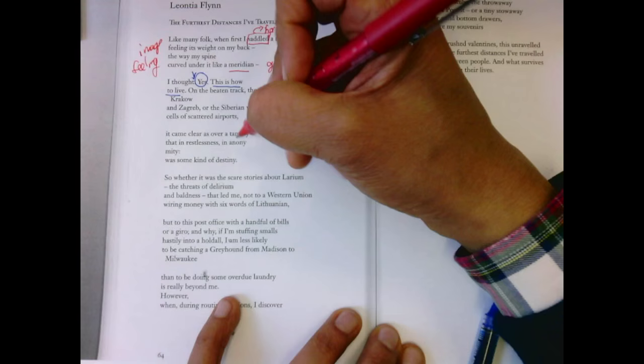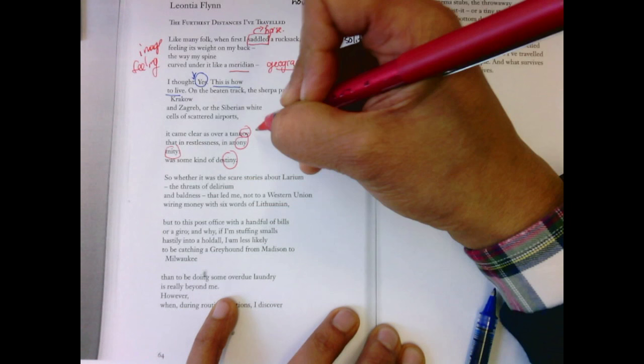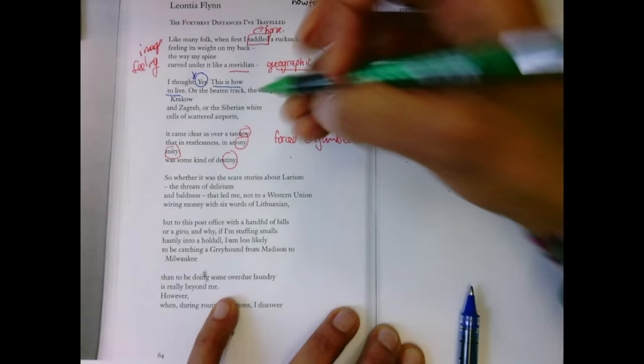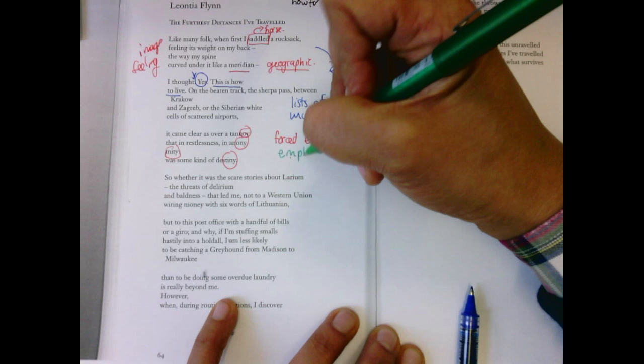It came clear over a tannoy that in Restless an animity was some kind of destiny. We get this rhyme, this forced enjambed lines to help with the, to emphasize her unusual life, her unusual journey.